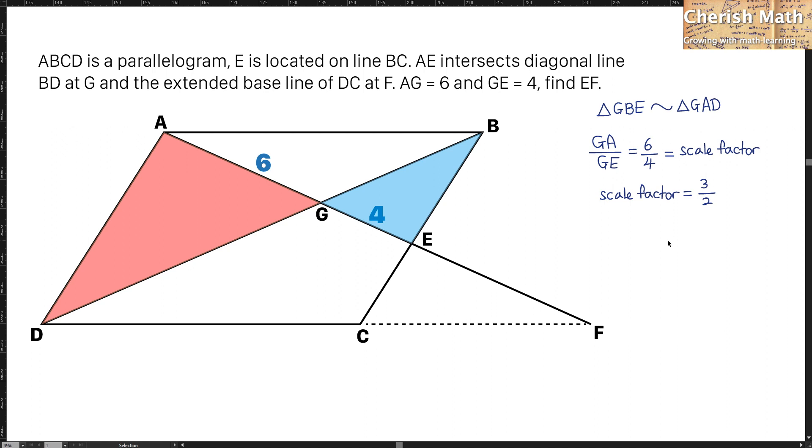For the next two triangles that are similar to each other, I am going to label it in a green color. That is to say, for the triangle GAB, it is similar to the triangle GDF.